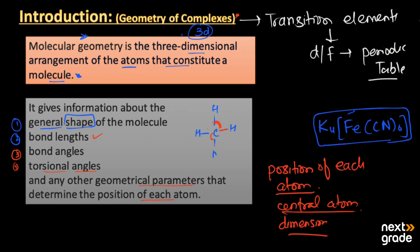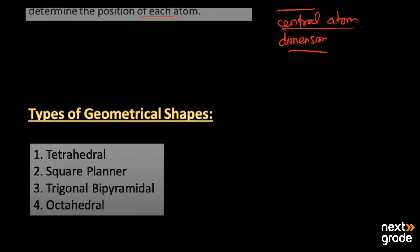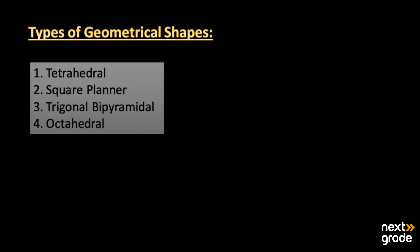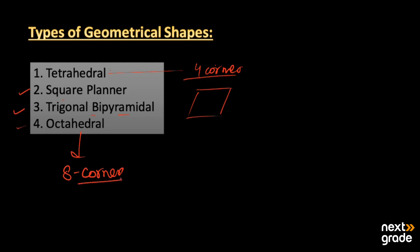There are different types of geometrical shapes of complexes. The first one is tetrahedral — four corners. The second is square planar — a square shape. Then we have trigonal bipyramidal — three corners with two pyramidal shapes attached. The last one is octahedral — it has an eight-corner structure. Now let's discuss these structures one by one with examples.